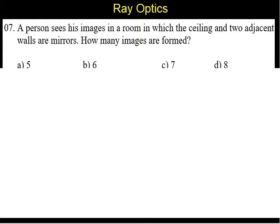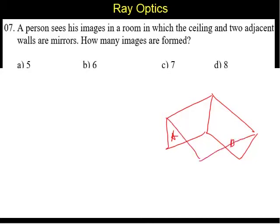So, in this case, we can say there are two adjacent walls which are 90 degrees to each other. Let us say the walls are A and B. There is also a ceiling. Let us call the ceiling as C.